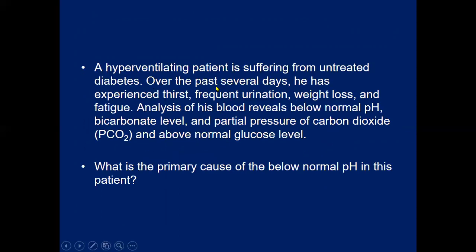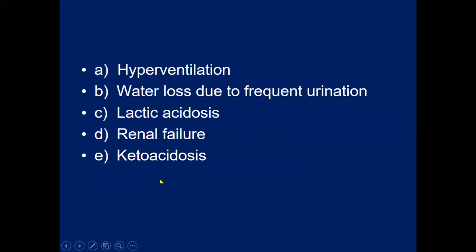A hyperventilating patient with untreated diabetes presents with several days of thirst, frequent urination, weight loss, and fatigue. Blood analysis reveals below-normal pH, bicarbonate, and partial pressure of carbon dioxide, and above-normal glucose level. You may be asked for the pathophysiology and the primary cause of the below-normal pH, which is ketoacidosis. These are the types of scenarios likely to appear in examinations.